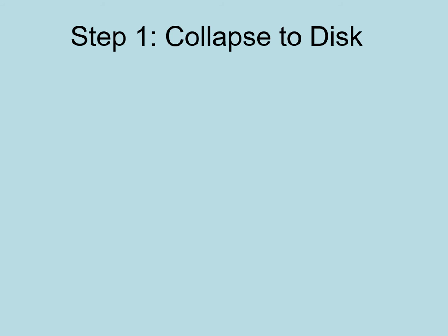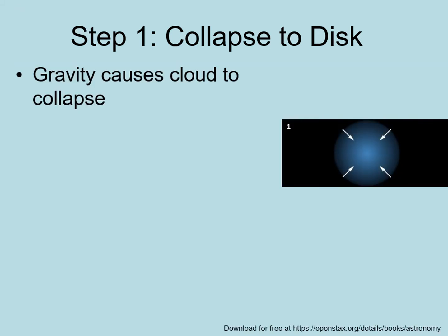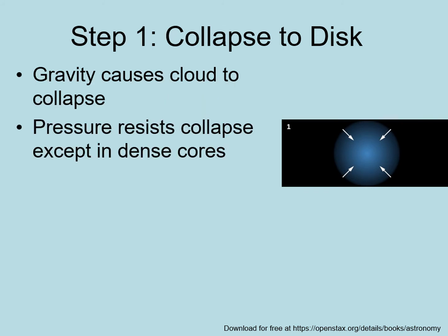The force that starts the formation of a star, and hence a solar system, is gravity. Every bit of matter in the cloud pulls on all the rest, trying to draw all parts of the cloud closer together. One thing that resists this is the cloud's temperature — the random motions of the atoms create an outward pressure, preventing the cloud from collapsing. However, in the densest cores, the density is high enough and temperature low enough that gravity can overcome this pressure and collapse can begin.